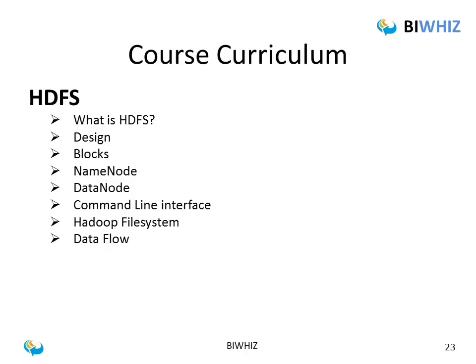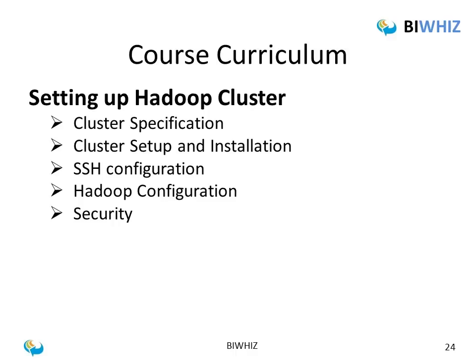We will take each Hadoop component and explain them one by one, beginning with HDFS. We will cover what HDFS is, how it is designed, what a block is, what a name node is, what a data node is, how to execute commands on HDFS, and about the Hadoop file system. We will also talk about how to set up a Hadoop cluster — how to define cluster specifications, how to do the installation and Hadoop configuration, and what security features are available.